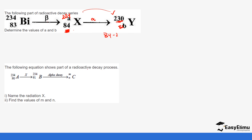The following equation shows another part of the radioactive decay process. Starting with A, which undergoes a certain radiation — you notice the mass number remains the same and the atomic number increases by one — this tells us it is a beta particle. After that it undergoes alpha decay.